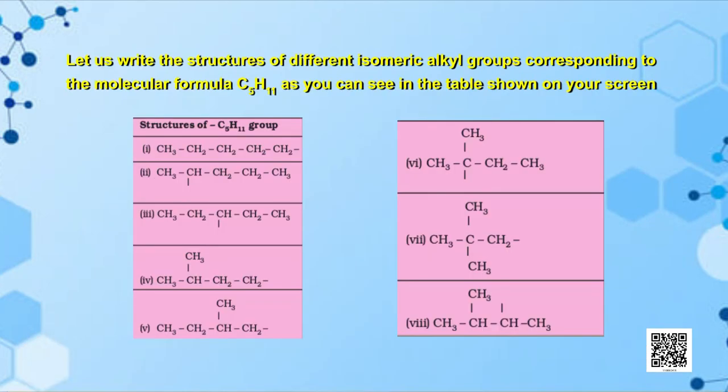You have already read about IUPAC nomenclature of alkanes, but we will discuss it further with examples of pentane C₅H₁₁. We will write the structures of different isomeric alkyl groups corresponding to the molecular formula C₅H₁₁ — eight isomers are possible, some linear and some branched, as shown in the table on screen. It is important to write the correct IUPAC name for a given structure, and equally important to write the correct structure from a given IUPAC name. To do this, first write the longest chain of carbon atoms corresponding to the parent alkane, then number it and attach the substituents to the correct carbon atoms, and finally satisfy the valency of each carbon atom by putting the correct number of hydrogen atoms.